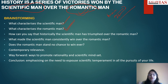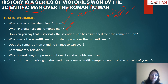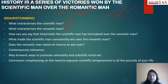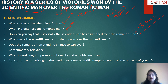Then you come to the main demand of the topic — how can you say that historically the scientific man has always triumphed over the romantic man? That is the main content of the essay. That dimension should be given more weightage in terms of pages — actually two or three pages — and you should write at least five or six diverse examples.